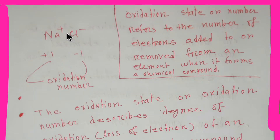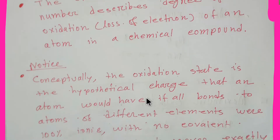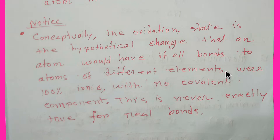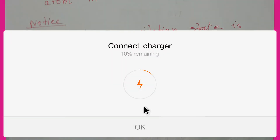We also need to consider this point conceptually: the oxidation state is the hypothetical charge that an atom would have if all bonds to atoms of different elements were 100% ionic with no covalent component. This is never exactly true for real bonds.